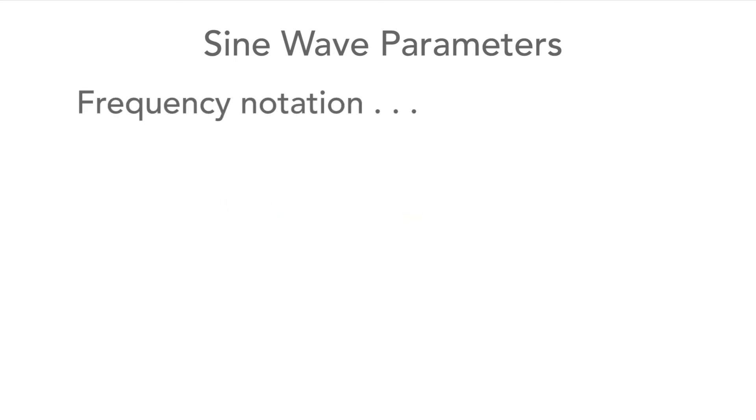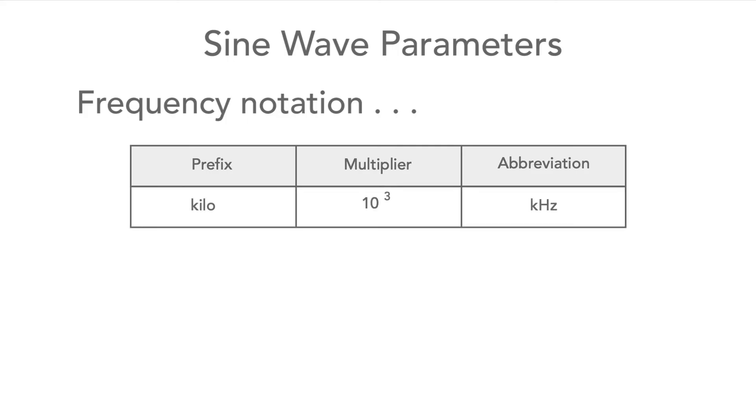As frequencies can rise very high, we use the standard metric multiples of kilo for a thousand hertz, mega for a million hertz, and giga for a thousand million.